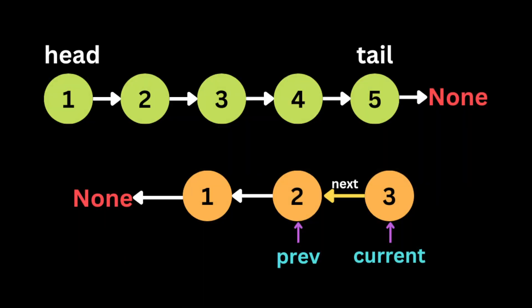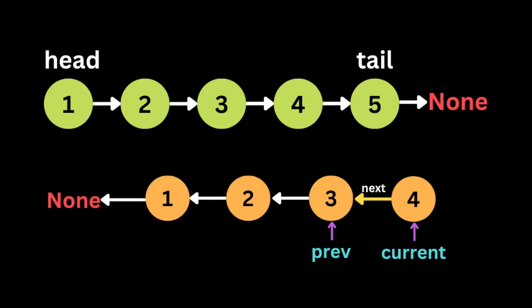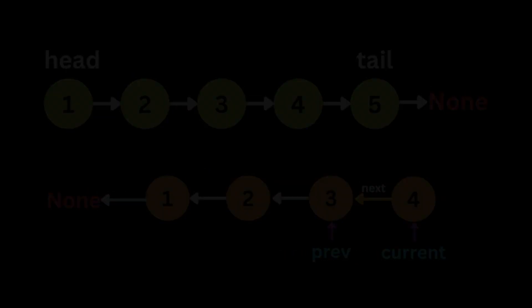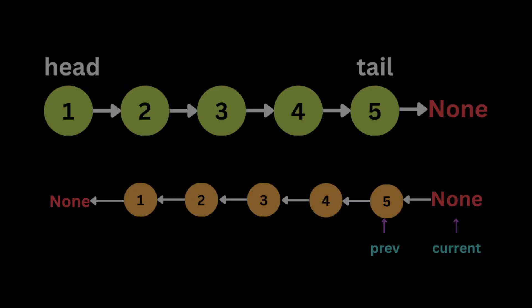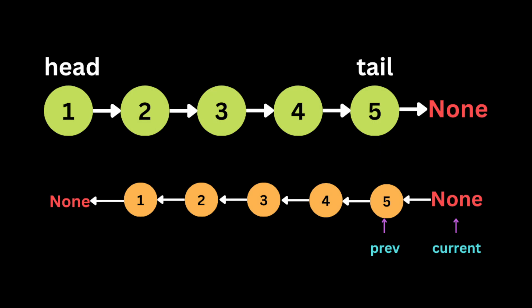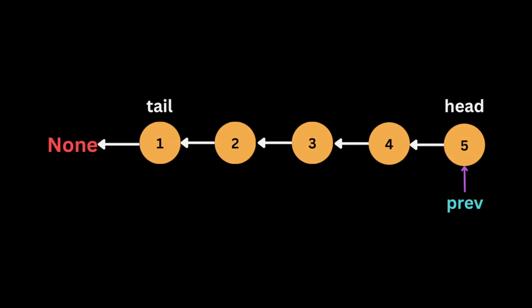We repeat the same process — changing the direction of the pointer to point to the previous node, moving current to the next node, and previous to the current node. We repeat this until we reach the end of the linked list, where previous will be at the last node and current will be equal to none. Then we return the previous node, which will be the head of the reversed linked list.